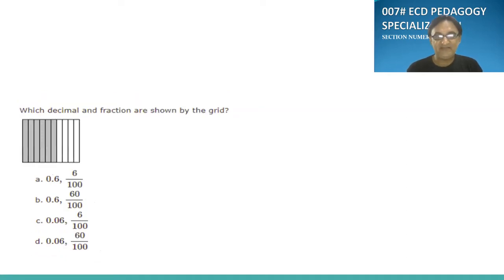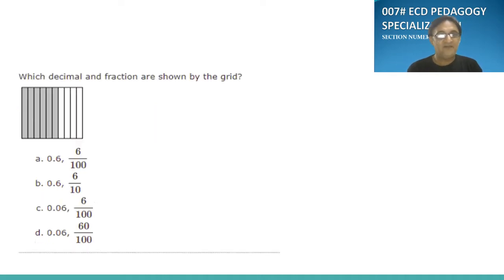Which decimal and fraction are shown by the grid? So 6 are shaded. So 6 by not 100. This is a mistake here. 6 by 10. So it's 6 by 10. So we'll go for this. This is a mistake, the typing error. So 6 by 10, and the answer will be 0.6. Here the correct one is B. I'm giving you the correct one, B here.